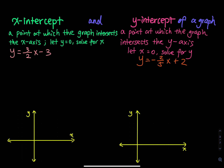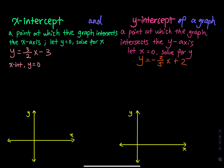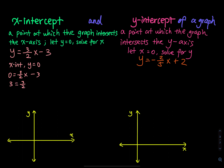Let's find the x and y-intercepts of the first equation. To find the x-intercept, we let y equal to 0. So when y equals 0, we have 0 = (3/2)x minus 3. Solving this simple linear equation, we get 3 = (3/2)x, so x equals 2. The x-intercept is (2, 0).